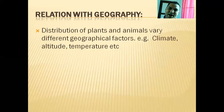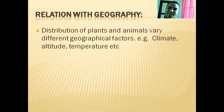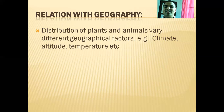We can see certain plants and animals in the Himalayan region that we cannot see in the Tarai. These types of distribution relationships are in geography — this is one of the relations between biology and geography.